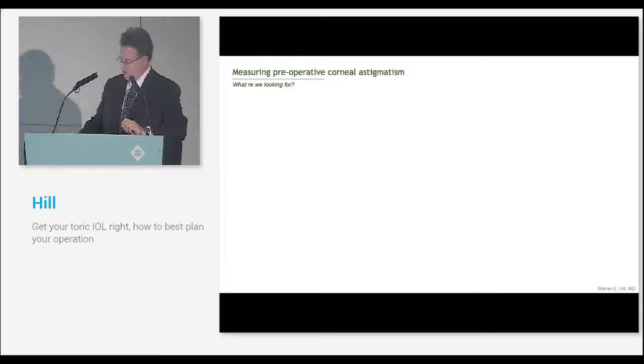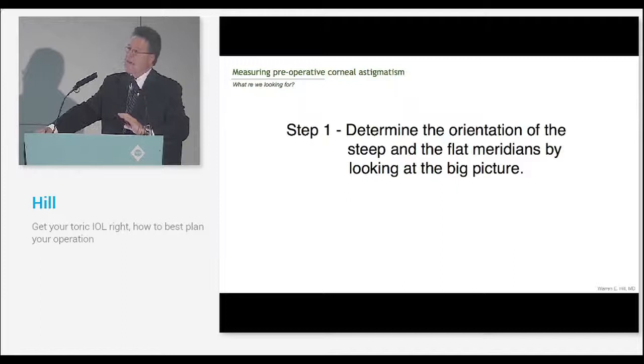We have to think like the toric calculator. The toric calculator doesn't care if the Ks are 46 and 45 or 45 and 44. What it looks for is a one diopter difference. It also cares about the direction. If we have an angular error, we're going to be off. The two things we need to do is determine the orientation of the steep meridian and the power difference between meridians.